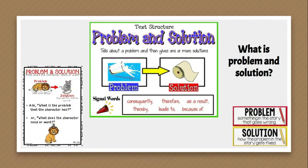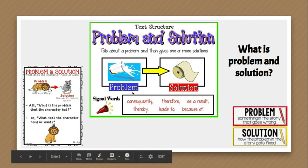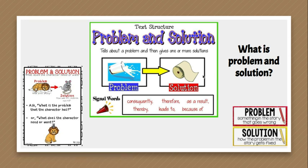But what is Problem and Solution? Problem and Solution tells about a problem and then gives one or more solutions. For example, in this poster, the problem is the glass of milk was spilled. The solution could be: use a paper towel to clean it up. A problem is something in the story that goes wrong. The solution is how that problem gets fixed.